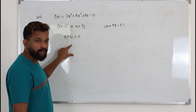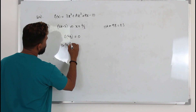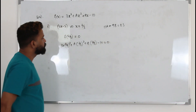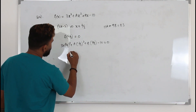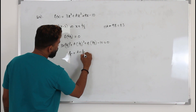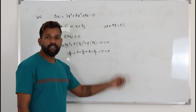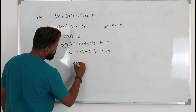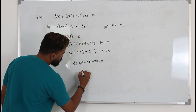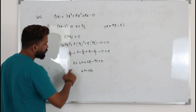Plugging x = 2/3 into the function gives another equation: 3(2/3)³ + a(2/3)² + b(2/3) - 10 = 0. Simplifying: 8/9 + 4a/9 + 2b/3 - 10 = 0. Multiply throughout by 9 to clear fractions: 8 + 4a + 6b - 90 = 0, so 4a + 6b = 82.